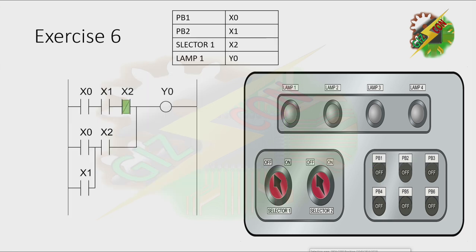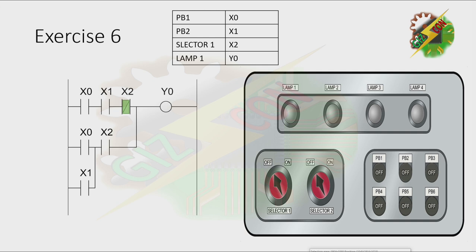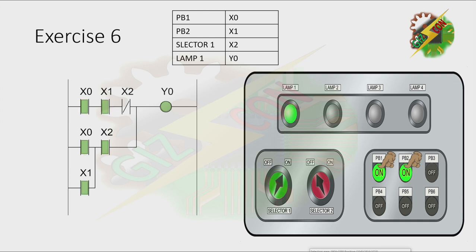Okay, let's continue. This is my answer for this exercise. You have a table above, which is our guide to the PLC program and hardware. Selector switch is off: when I press PB1, nothing will happen; when I press PB2, nothing will happen also; when I press both push buttons, lamp 1 will turn on. Now let's turn on the selector switch: when I press PB1, lamp 1 will turn on; when I press PB2, lamp 1 will turn on also; when I press both buttons, lamp 1 will turn on also. And that's how we solve Exercise 6.